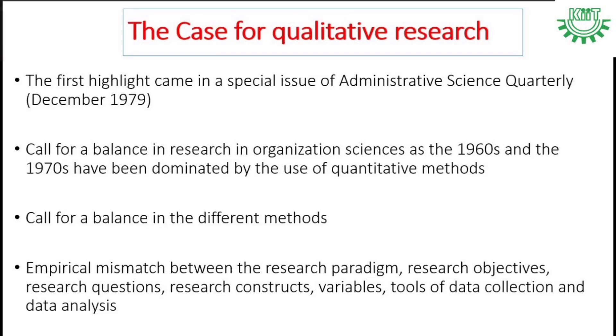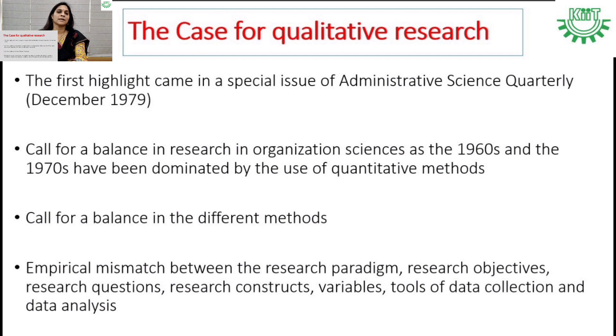If you look at the domain of qualitative research, it has not seen too many years as the positivist quantitative research paradigm has. The first issue of qualitative research came into highlight in the topmost journal of the Academy of Management — Administrative Science Quarterly — in December 1979. Qualitative research came into prominence because there was a call for a need for balance between both quantitative and qualitative research methodologies within the diverse specializations in the management discipline.